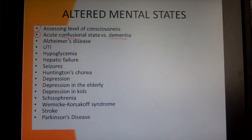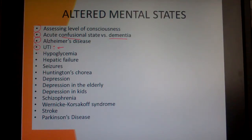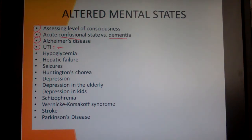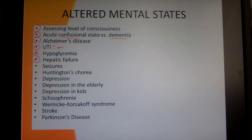We'll look at deliria versus dementia, specifically looking at different pathologies like Alzheimer's disease. Upper urinary tract infections we'll look at because that is a fairly common cause of delirium in elderly people that gets mistaken for a psychological issue. We'll also look at things like hypoglycemia, hepatic failure, seizures, and the different kinds of seizures, as well as Huntington's chorea, which is a movement disorder that also has some other functional deficits along with it.